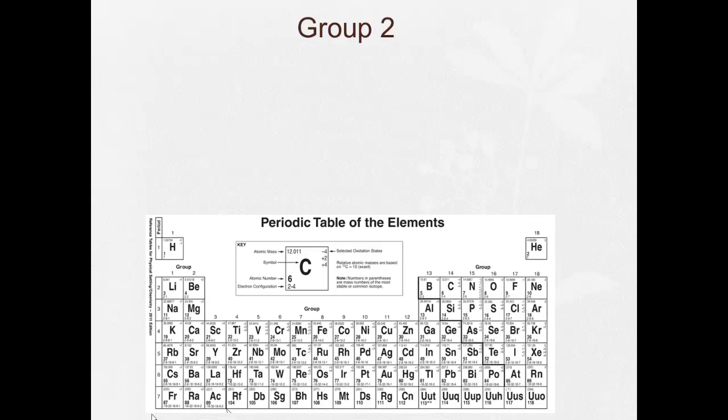Next group we're going to look at is right next door, group 2. And these are the alkaline earth metals. So group 1 was alkali metals. Group 2 is alkaline earth.